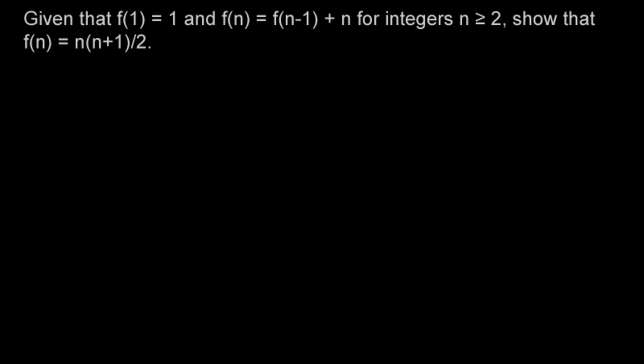Given that f(1) equals 1 and f(n) equals f(n-1) plus n for integers n greater than or equal to 2, show that f(n) equals n times (n+1) over 2.